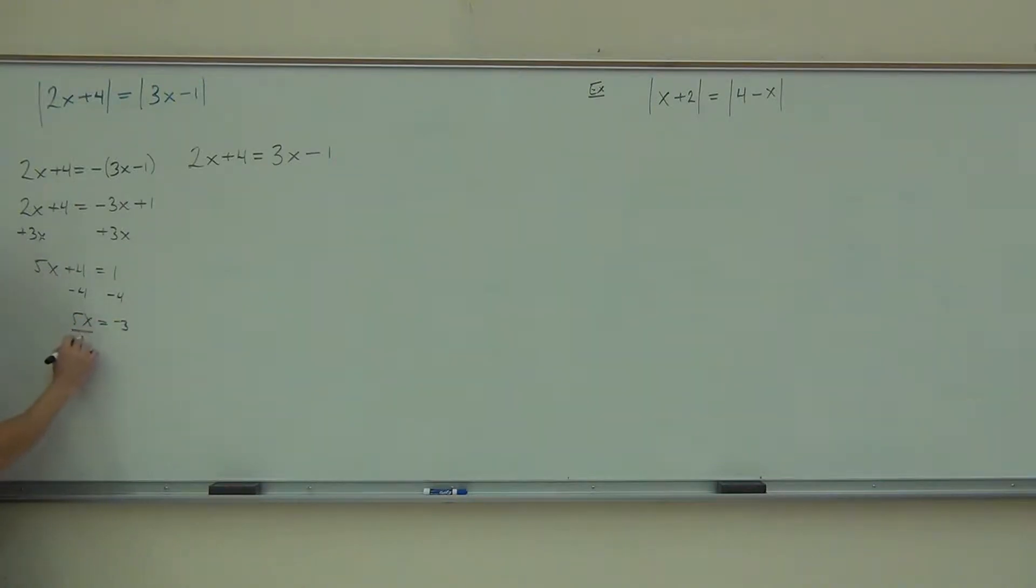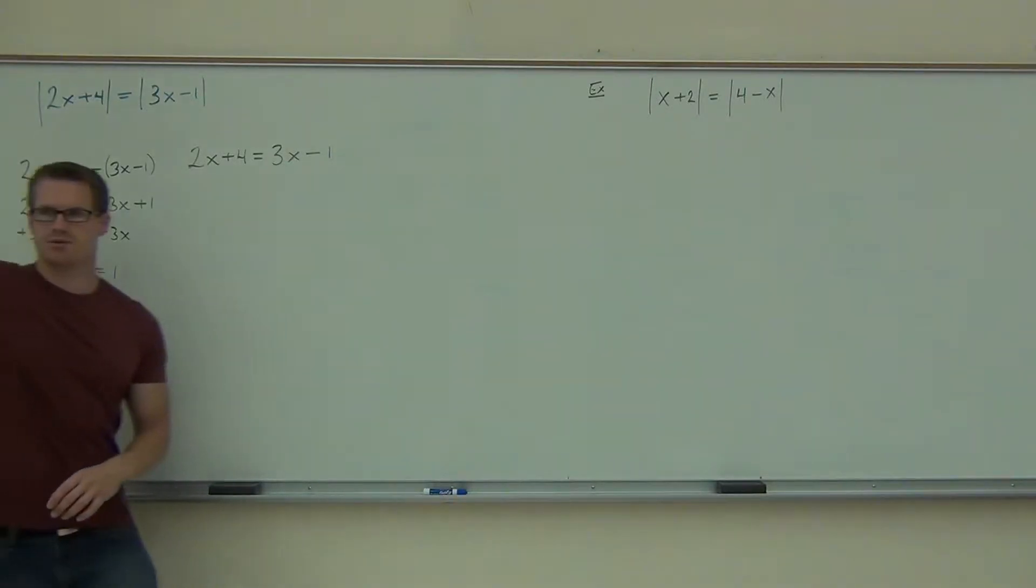x equals negative three, we divide by five, and we get x equals negative three-fifths. Raise your hand if you've got x equals negative three-fifths.